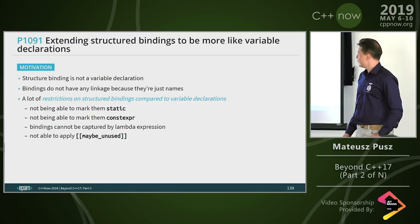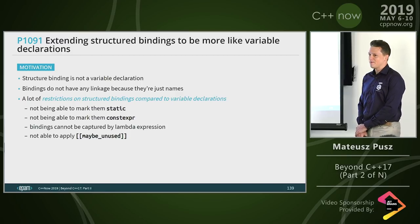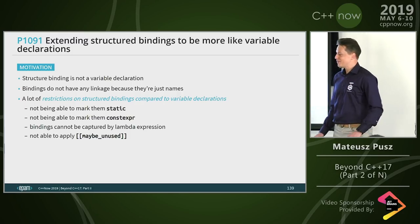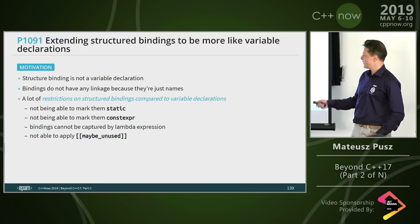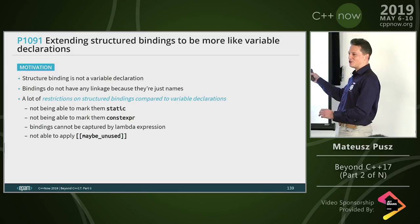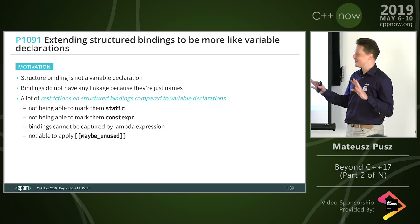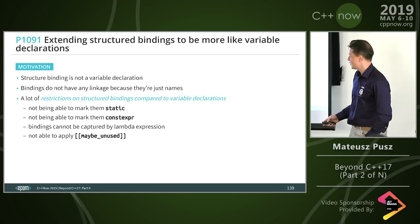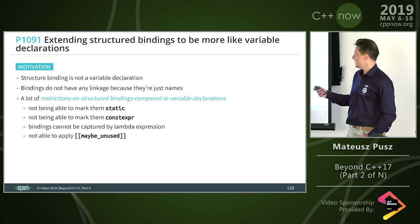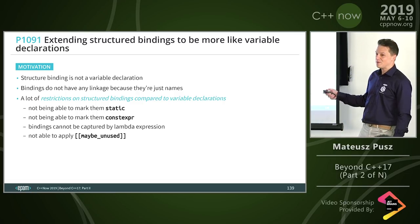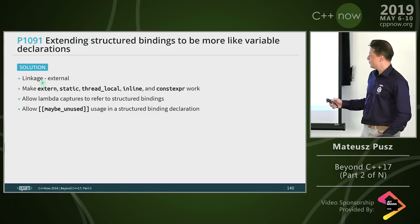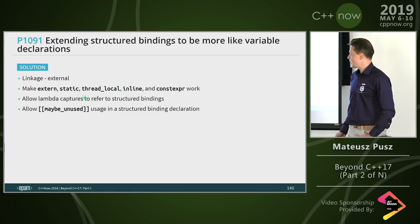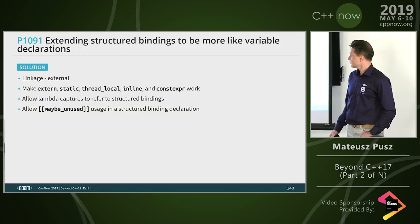Structured bindings, a C++17 feature, are one of the few magic things in C++. They cannot really be expressed as a code generator — the binding names are not actual references, they're some kind of alias, so they behave differently: you can't make them static, use `[[maybe_unused]]`, or capture them in lambdas. In C++20, structured binding names will have specific linkage — you'll be able to use them with `static`, `thread_local`, `inline`, and `constexpr`, capture them in lambdas, and use attributes on them.